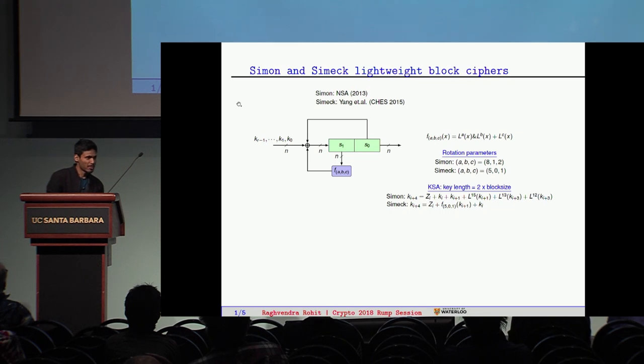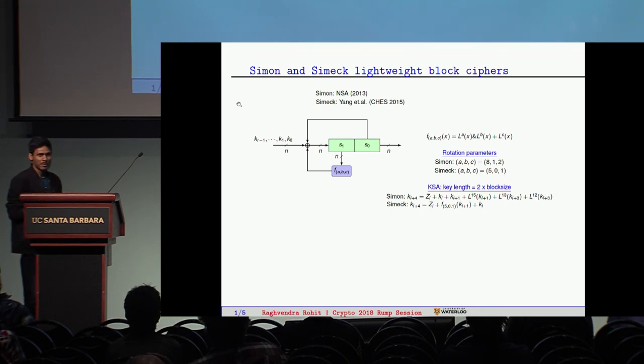Simon implies NSA, thus NSA implies backdoors. A corollary of this disclaimer: backdoor in Simon implies backdoor in CIMAC. The reason is both these ciphers have a similar structure.